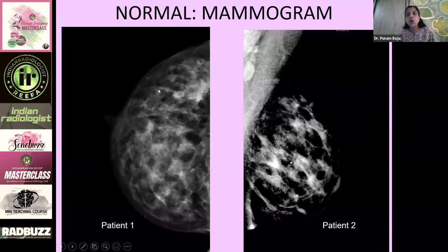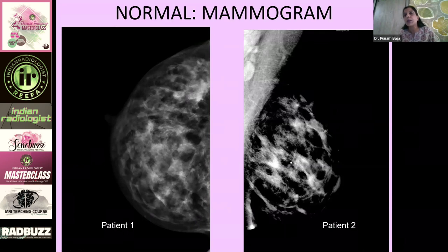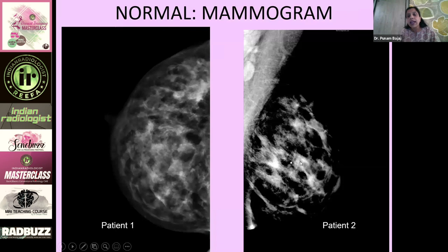What do we expect a normal mammogram to look like? Of course there will be an increase of the glandular tissue, so the breasts are going to be heterogeneously dense. Is there a way to reduce the overall breast density? Yes — milking out the breast before the mammogram can be helpful. And most importantly, we must place a marker in the region of the palpable concern to help detect that region better when assessing a heterogeneously dense breast.